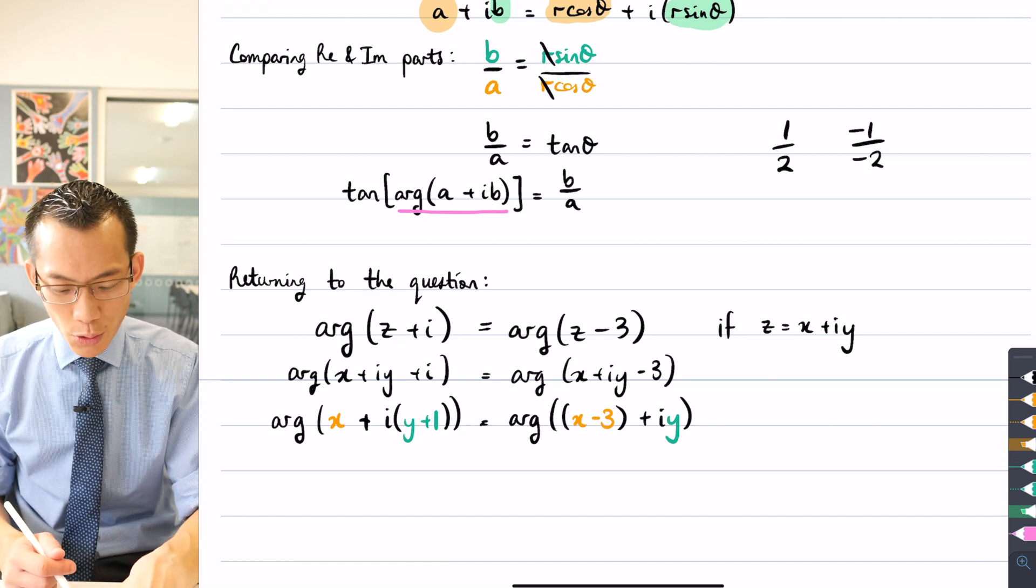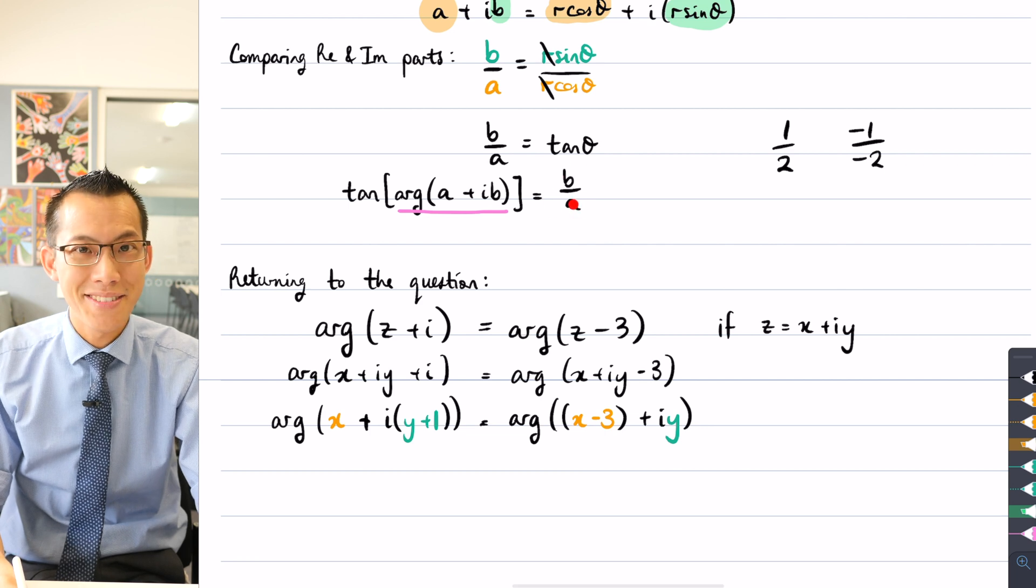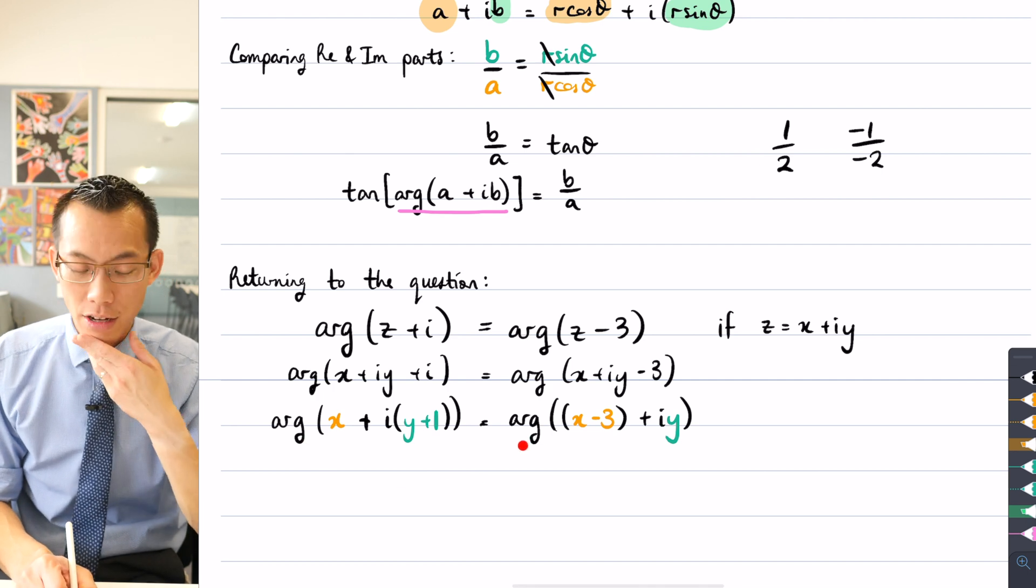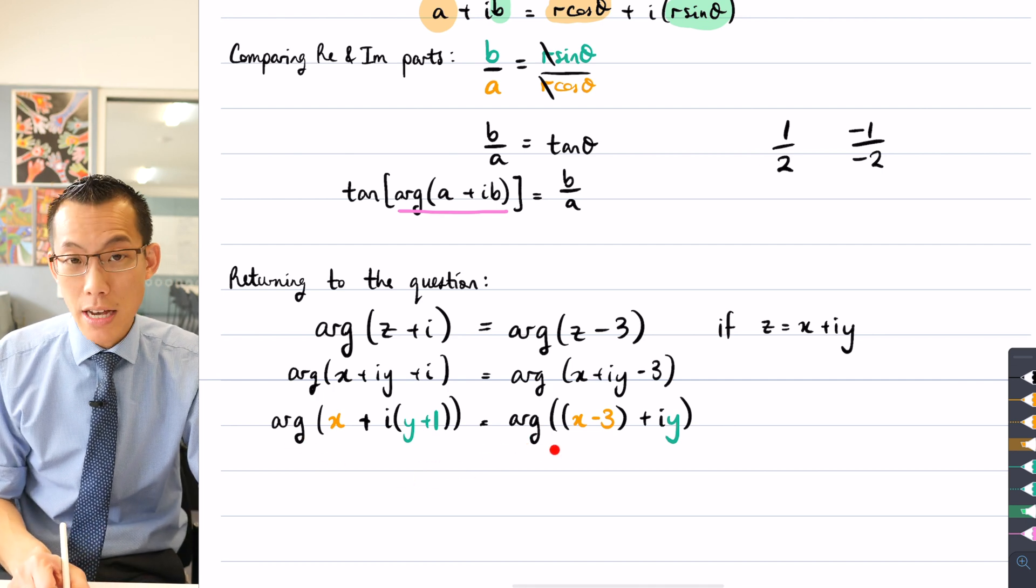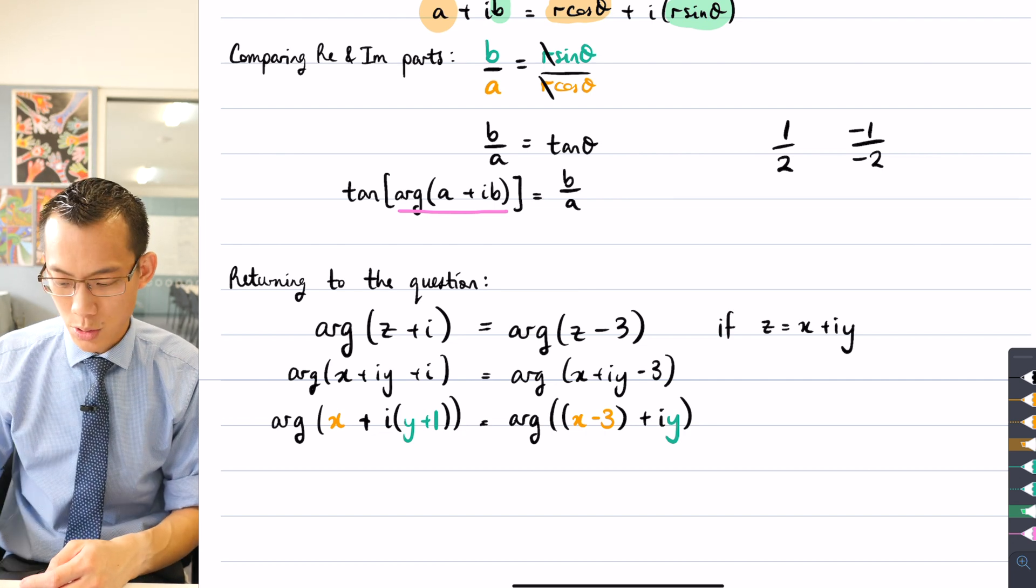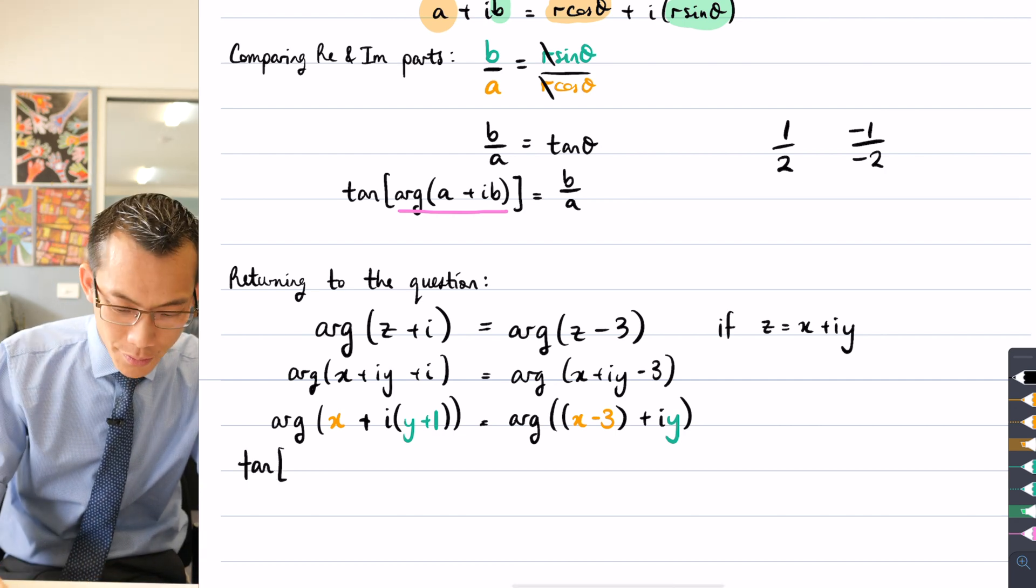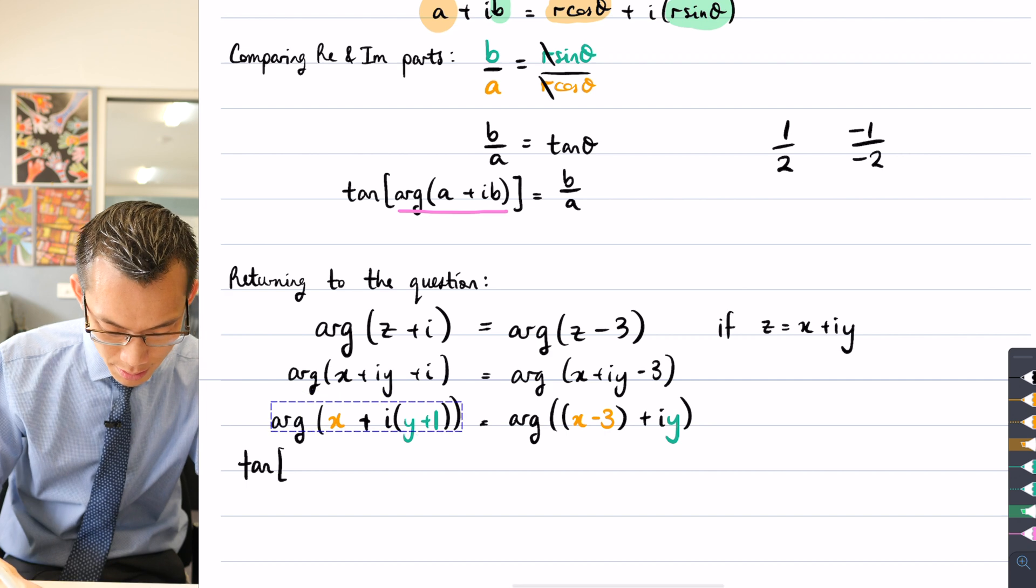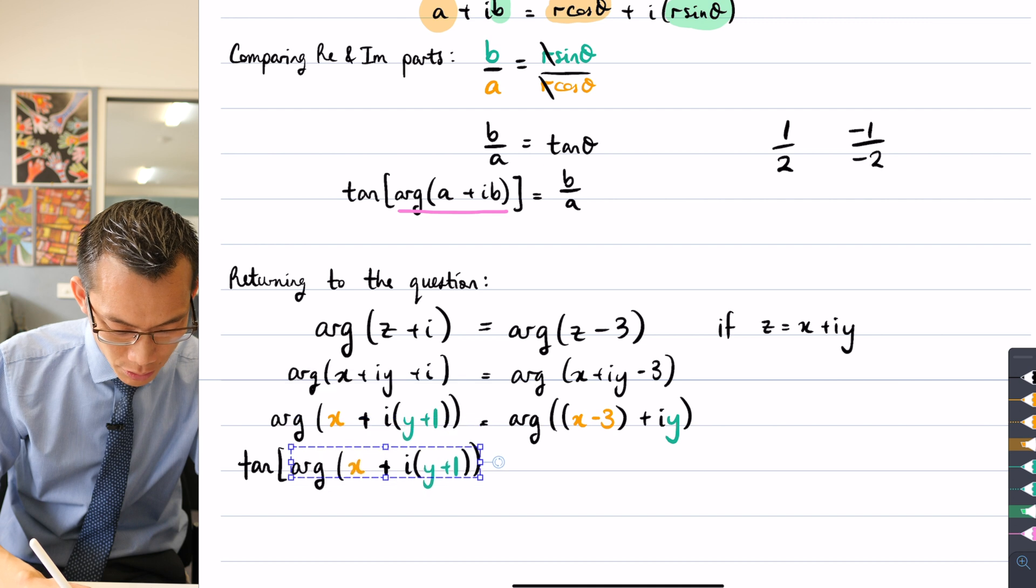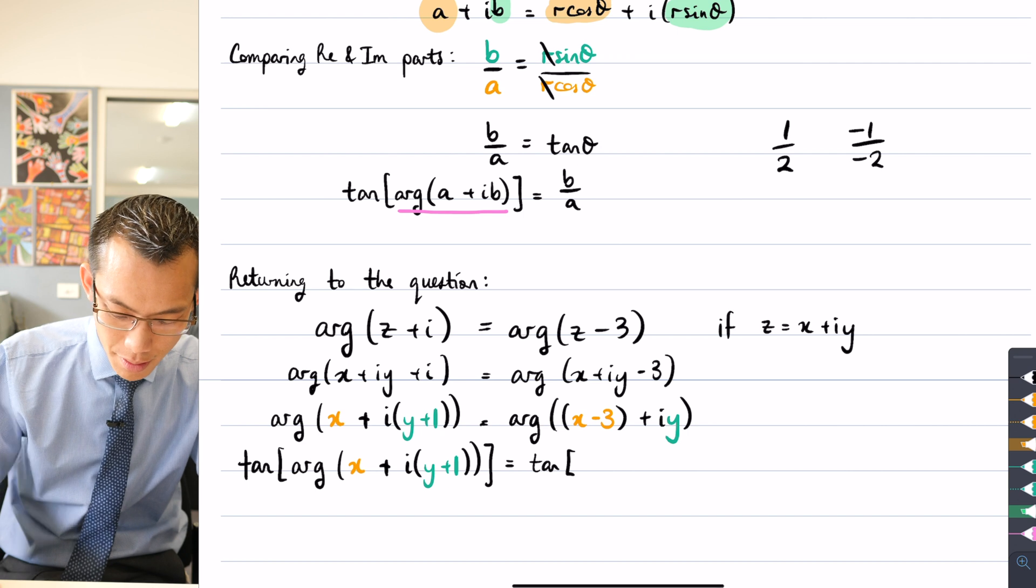Now in order to tease out all of this and to turn it into something much simpler, all I need to do is take tan of both sides, right? If these two angles, that's what arguments are, they're just angles. If these two arguments really are equal, then tan of those arguments will also be equal. So I'm going to take tan of both sides. When I do that, tan of everything you can see here, this is going to be a rather long line, but we'll do our best. Tan of this angle will equal tan of this angle.